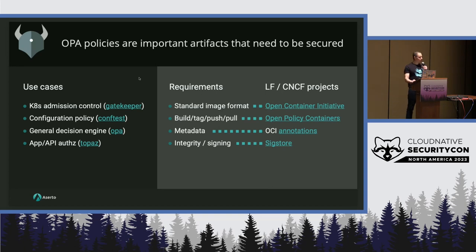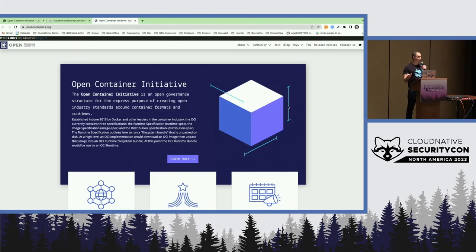What's so hard about securing OPA policies? Well, policies are by default built into Tarballs, and Tarballs don't really lend themselves well to secure software supply chains. Fortunately, in the ecosystem, we have the Open Container Initiative, OCI — it's been around for about eight years, and it's a Linux Foundation project.